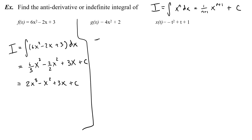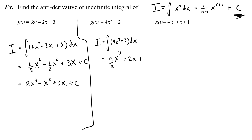Let's do this next one, g of x. The integral — summa — of 4x squared plus 2 with respect to x. I raise x to the power of 3 and I divide 4 by that new power 3. And the 2 just becomes 2x. I have to add plus c, because there could be some constant in my original function that I have no way of knowing by taking the antiderivative.